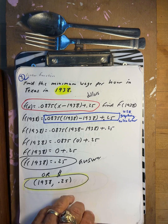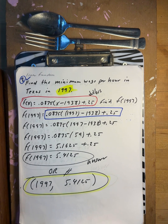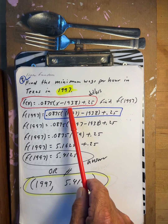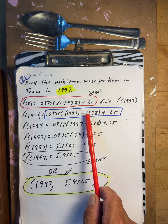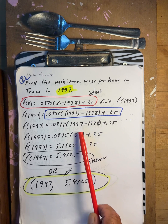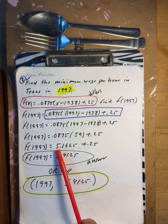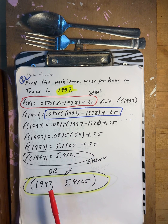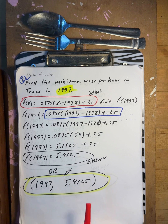Find the minimum wage per hour in Texas in 1997. f of 1997: 1997 minus 1938 gives 59. 59 times the coefficient is 5.1625, plus 0.25 is 5.4125. So in 1997, the minimum wage was about $5.41 per hour.